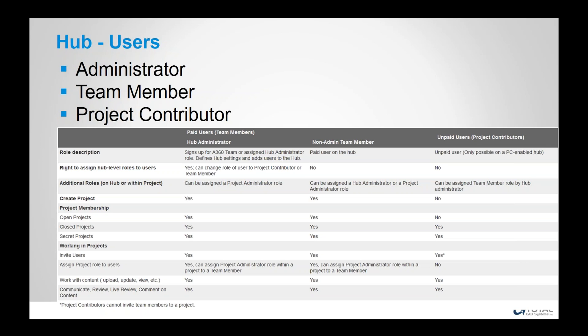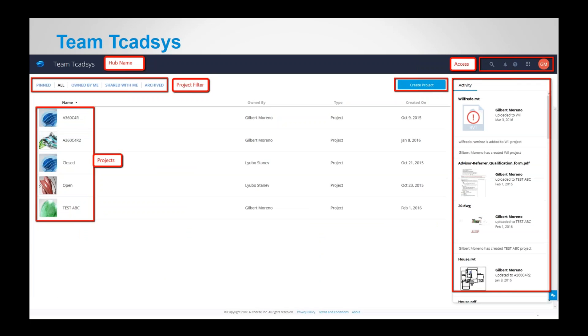When working with A360 Team, you have several user types: an administrator, a team member (who is a paid user), and a project contributor (who is an unpaid user). You can have as many project contributors as you want on your hub. Team members can invite project contributors, but the hub administrator would have to approve membership for a project contributor.